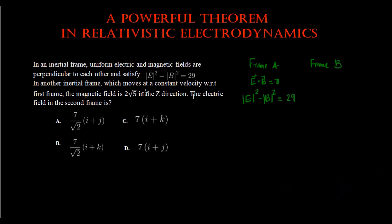In the other frame, which is moving at constant velocity with respect to frame A, the magnetic field is 2 root 5 in the z direction, denoted as k-cap.